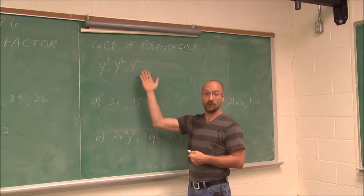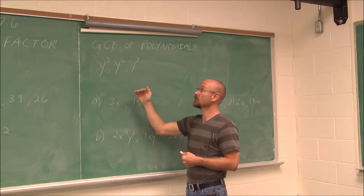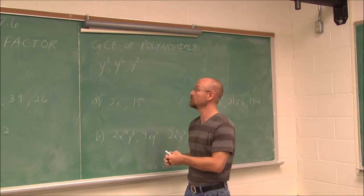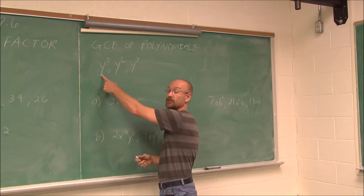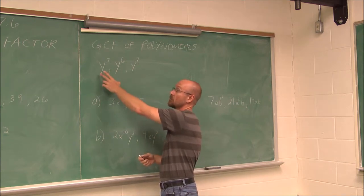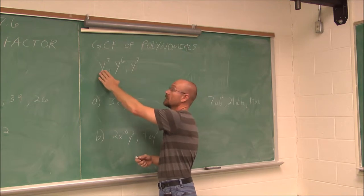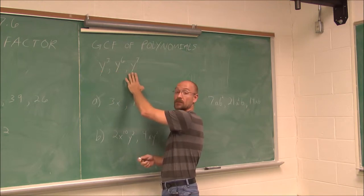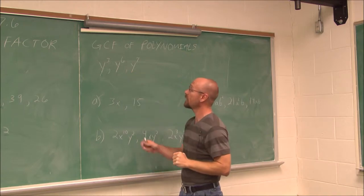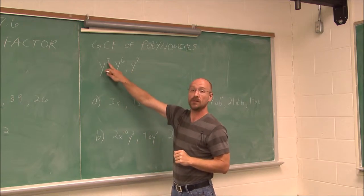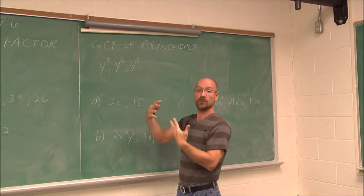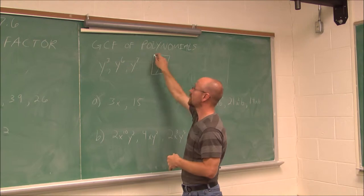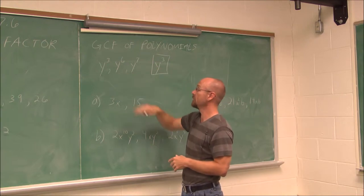They have factors of y in common. What is the greatest value that each of them has? This one has three, this has six, that has seven. Three is common to all of them — this one has at least three, this one has three or more, this one has three or more. So the greatest common factor is y cubed. All three of these would be divisible by y cubed.